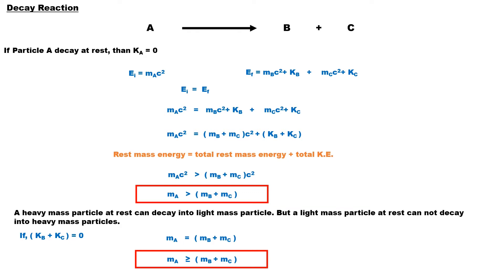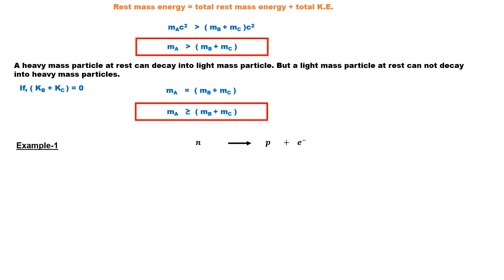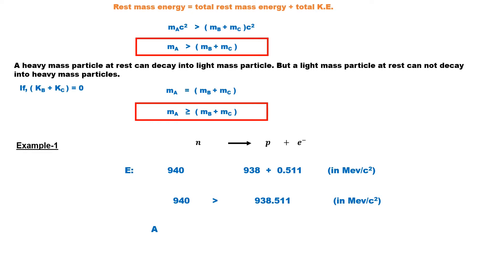As an example, consider the decay of a neutron into a proton and electron. The mass of the neutron is 940 MeV, while the masses of the proton and electron are 938 MeV and 0.511 MeV respectively. Since the mass of the parent neutron is more than the total mass of both daughter particles, energy is conserved in this reaction, and the decay is allowed according to energy conservation.